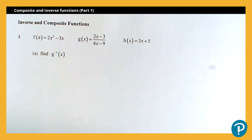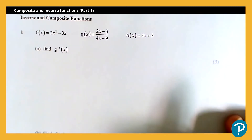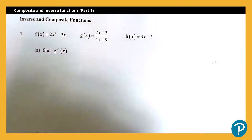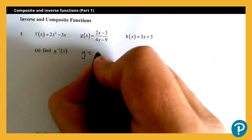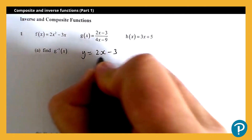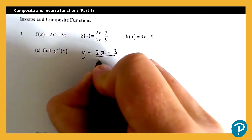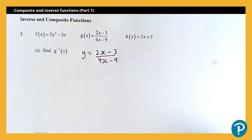We've been given three different functions: f of x, g of x, and h of x. And the first question is asking us to find the inverse of the function g. So a standard method to do this is we'll write this as y equals, and then what we'll look to do is change the subject of the equation to x equals.